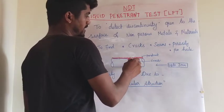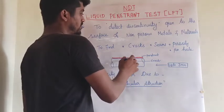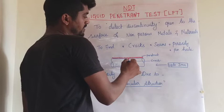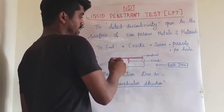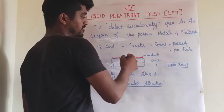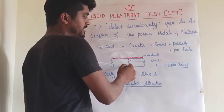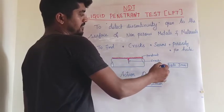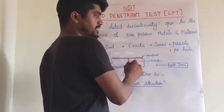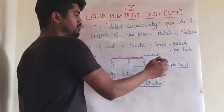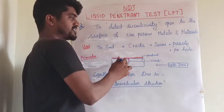Here, this is a non-porous metal or material. This red color is a penetrant. This is the defect, like a crack. When the penetrant is applied on the surface of the metal, the penetrant penetrates inside the cracked area. The sensitivity of the LPT is up to 3 mm — defects up to 3 mm can be found by the liquid penetrant testing method.